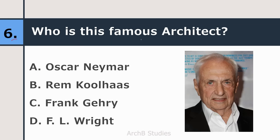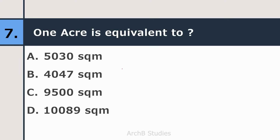Sixth question: who is this famous architect? Options: Oscar Niemeyer, Rem Koolhaas, Frank Gehry, or F.L. Wright? The correct answer is Frank Gehry. Some of his famous buildings are the Dancing House, Walt Disney Concert Hall, Fondation Louis Vuitton, Guggenheim Museum Bilbao, and Vitra Design Museum.